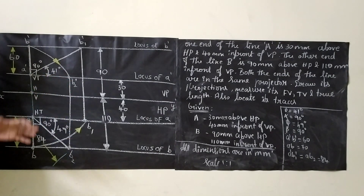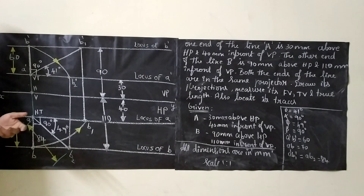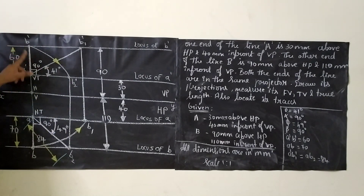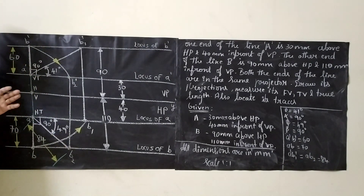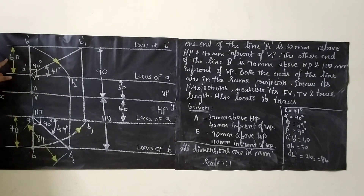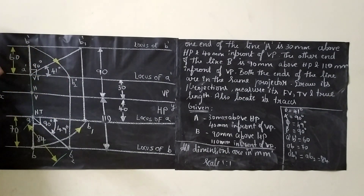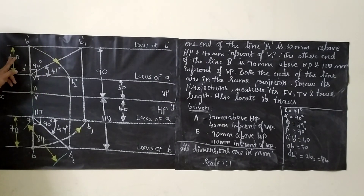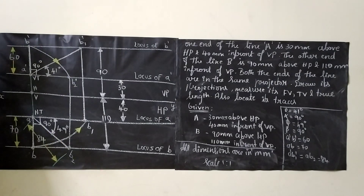After completing the diagram, we will do the dimensioning. The extension line should be very light and drawn with a two-edged pencil. The dimensioning line should be parallel to whatever line you are dimensioning. Try to break the line and write the number vertically with your HB pencil. The arrowhead should be sharp-pointed and also drawn with your HB pencil.